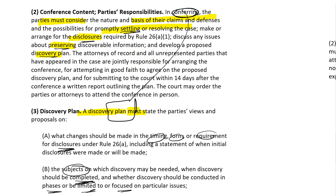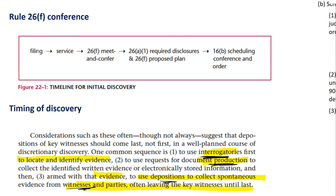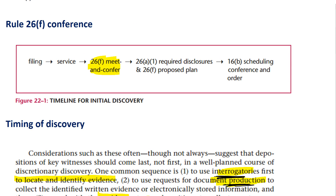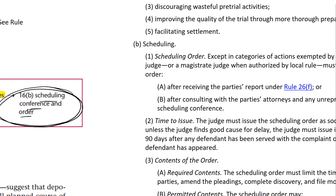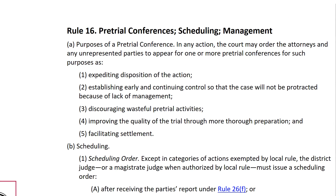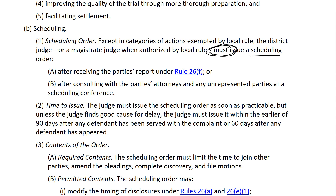Now let's look at the timing of this and how it ties in with Rule 16. The rule says that the parties have to try in good faith to agree on the discovery plan, and they've got to submit it to court within 14 days after the conference through a written report outlining the plan. You've got to have the 26F conference, then 14 days after that there's got to be the proposed discovery plan submitted to the court. After that, the court will either have its scheduling conference or a scheduling order. As we recently discussed with Rule 16, the court may order one or more pretrial conferences, but it must issue a scheduling order that addresses the party's report under Rule 26F.